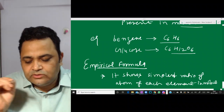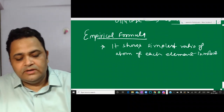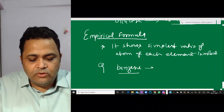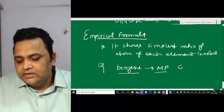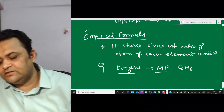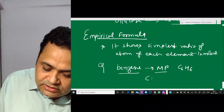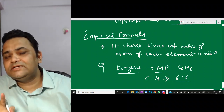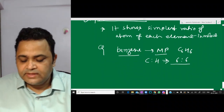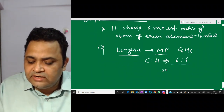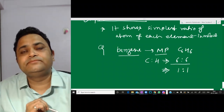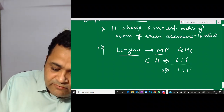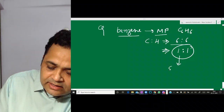What does simplest ratio mean? Take benzene as an example. Its molecular formula (MF) is C6H6. If I look at the ratio of carbon to hydrogen, it is 6:6 — meaning one molecule has 6 carbon atoms and 6 hydrogen atoms. If I divide by 6, the ratio becomes 1:1. Can I simplify it further? No, I cannot.